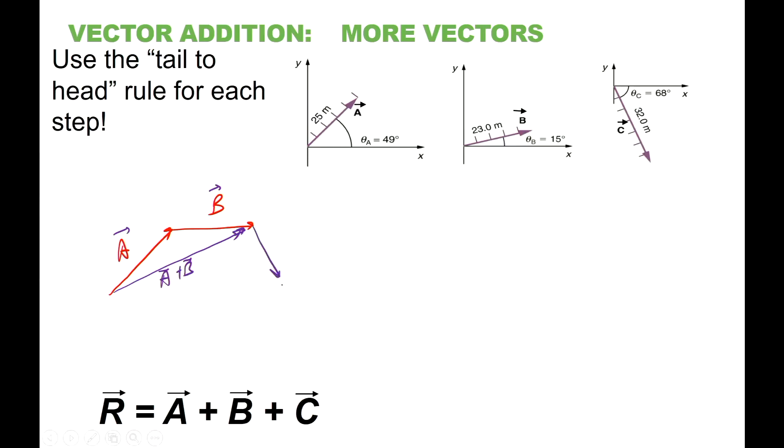And now we can draw the sum of A, B, and C. We just keep adding tail to a head, tail to a head until all vectors are being used.